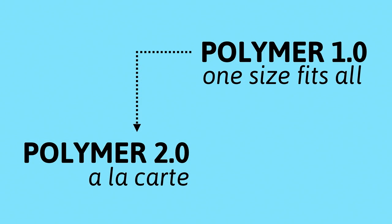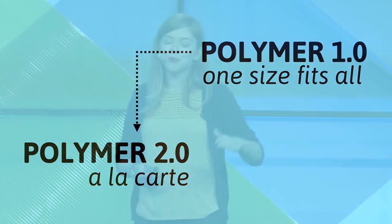So if in Polymer 1 we have this one-size-fits-all — everything is an element is an element is an element — in Polymer 2 we have this à la carte concept. The idea of Polymer 2 is that you get to pick and choose what you need. If you don't need something, you don't pick it. You don't bring it into your application.